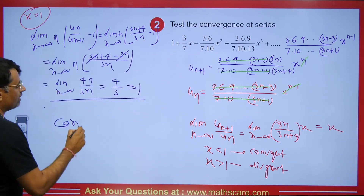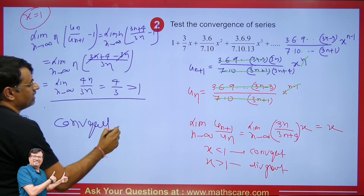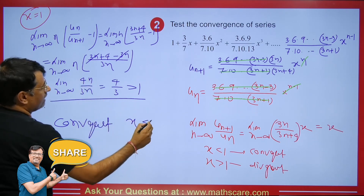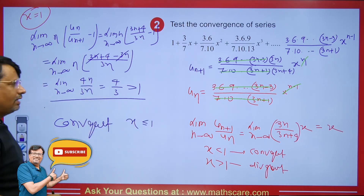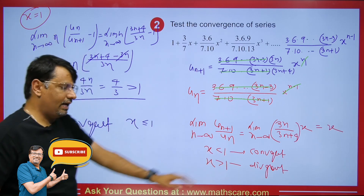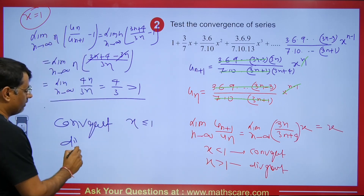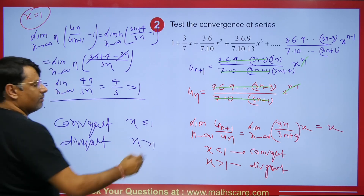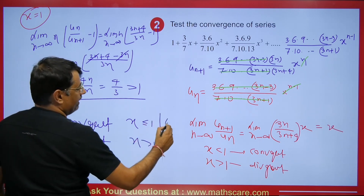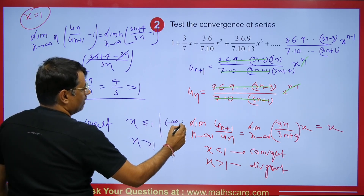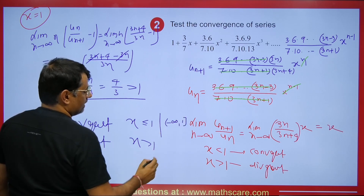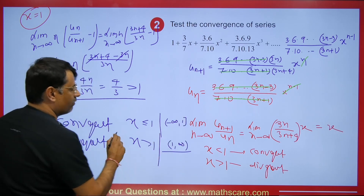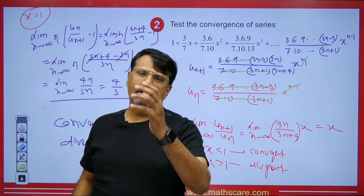Since the Raabe's Test gives 4/3 > 1, the series converges when x = 1. So the series converges for x ≤ 1, i.e., the interval of convergence is [−1, 1]. It diverges when x > 1, i.e., for x in (1, ∞).